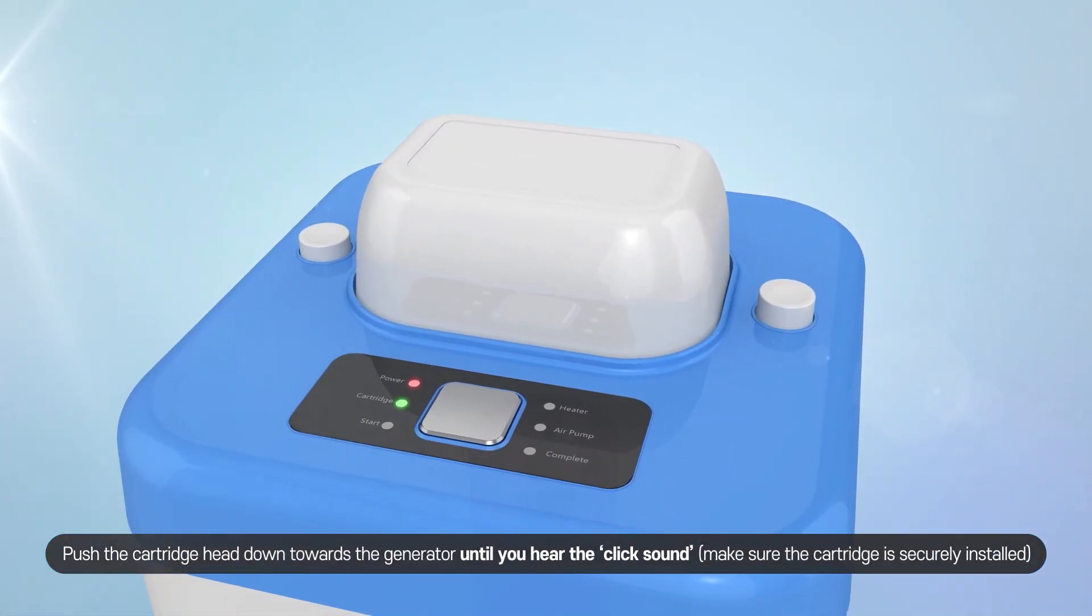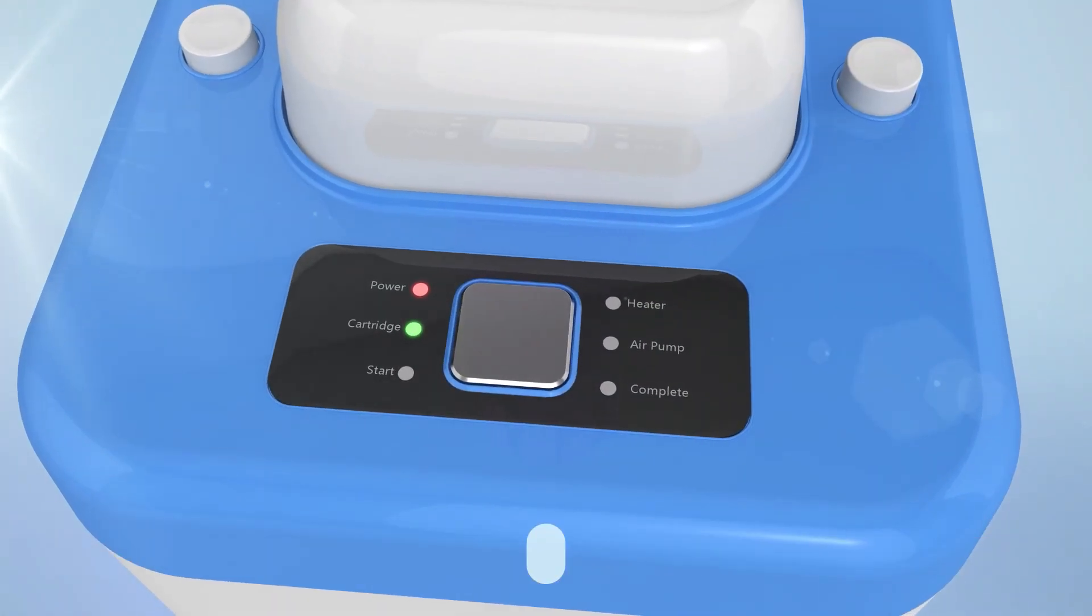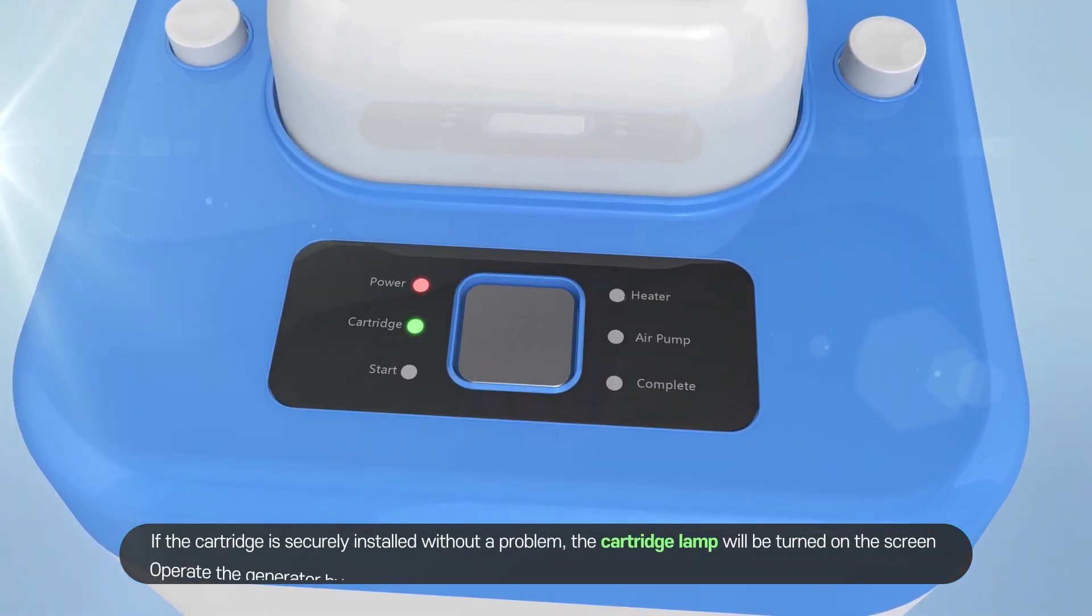Push the cartridge head down towards the generator until you hear the click sound. If the cartridge is securely installed without a problem, the cartridge lamp will be turned on the screen.